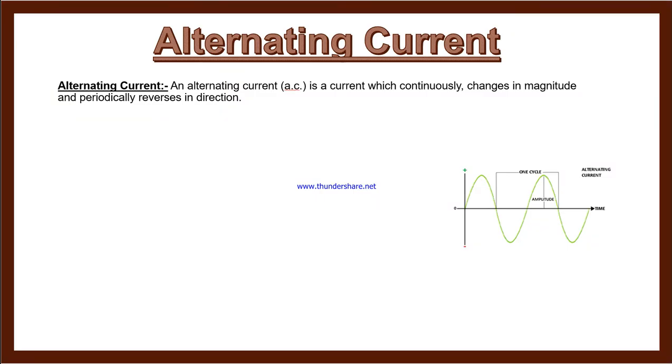First, let's see the definition. AC means alternating current, and alternating current is a current which continuously changes in magnitude and periodically reverses in direction. The magnitude changes with one peak positive and one peak negative, then positive, then negative.